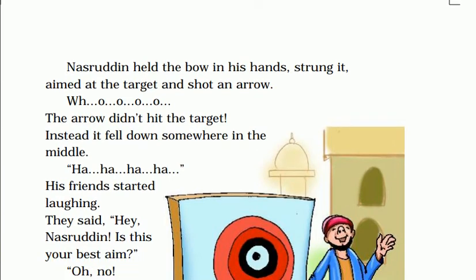Nasruddin held the bow in his hand, strung it — usne dhanush ko bandha — aimed at the target and shot an arrow. The arrow didn't hit the target; instead it went down somewhere in the middle — teer raaste ke beech mein hi kahi gir gaya. Yahan 'fell' use kiya gaya hai — fall, fell, fallen — jab cheez khud gir jati hai. Toh woh apne aap kahi gir gaya.